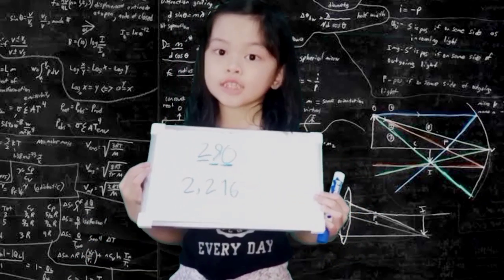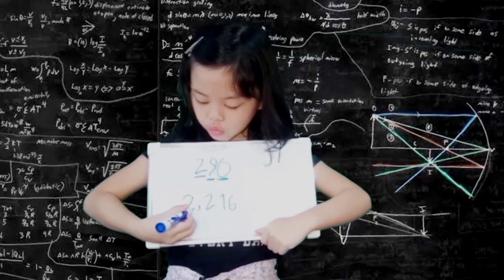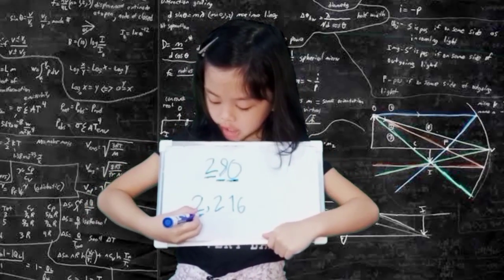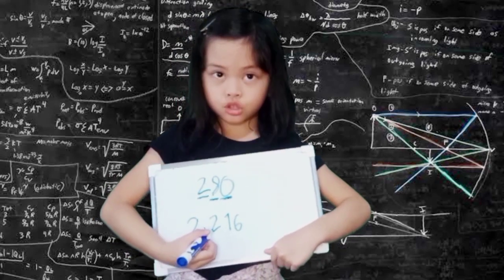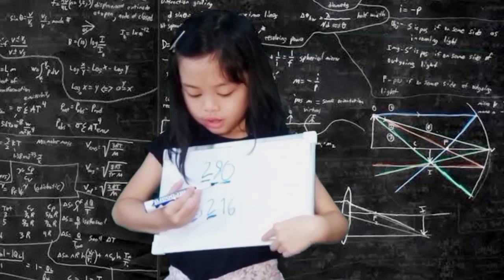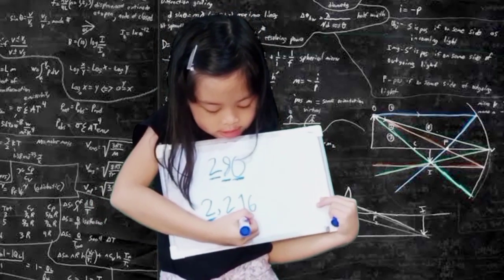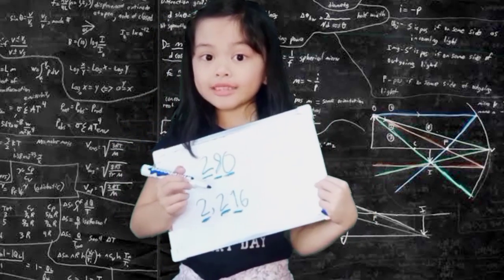And I'll show you another one, 2,216. The two at the first line is thousands, and the second one is another two which means hundreds. The number one here is tens, and finally the six is ones.